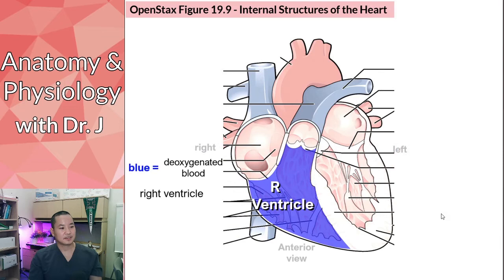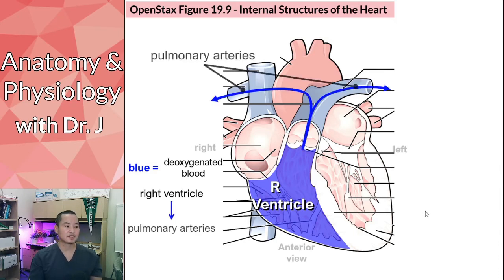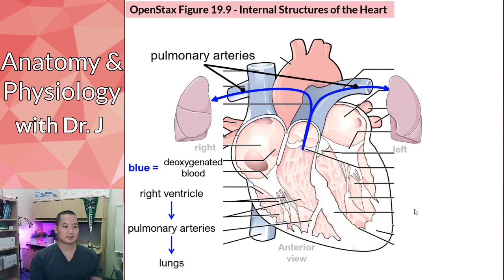Think about the right ventricle. It's pumping deoxygenated blood — but where does it go? Initially through the pulmonary trunk and then through the pulmonary arteries, which lead to the alveoli of the lungs — the inner part of the lungs. That's where the right ventricle sends its blood.